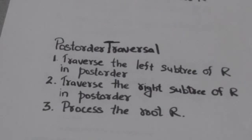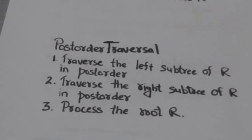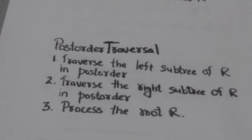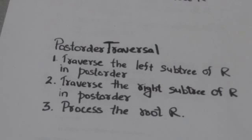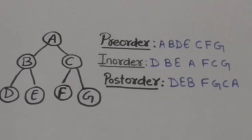In post-order traversal of binary tree T whose root is R, first the left subtree of root R is traversed in post-order, then the right subtree of root R is traversed in post-order, and after this root R is processed.